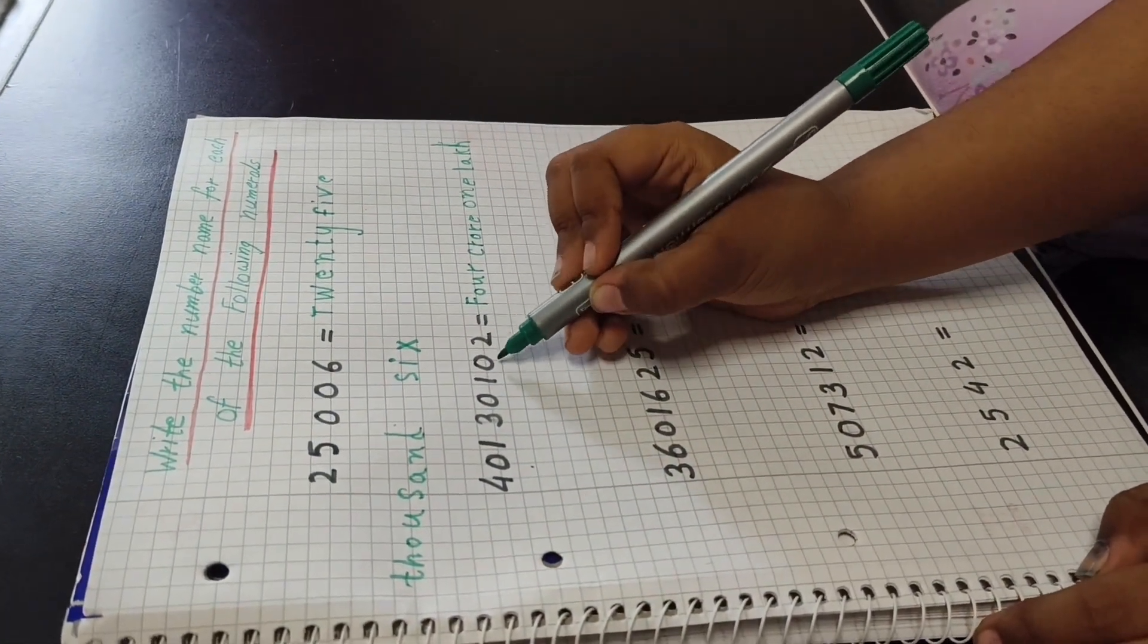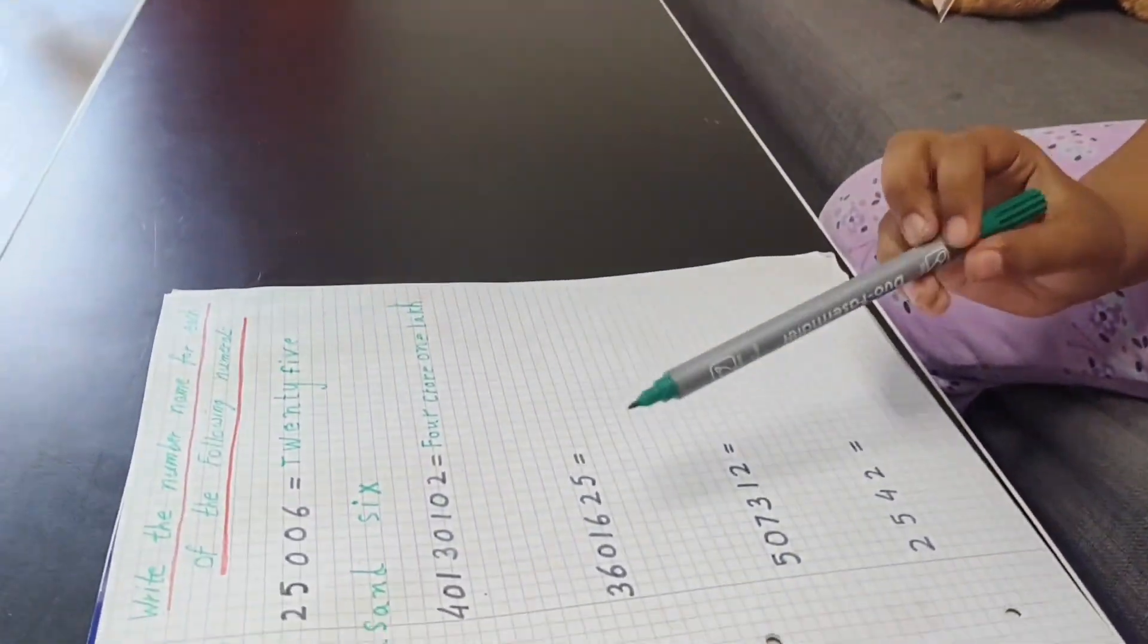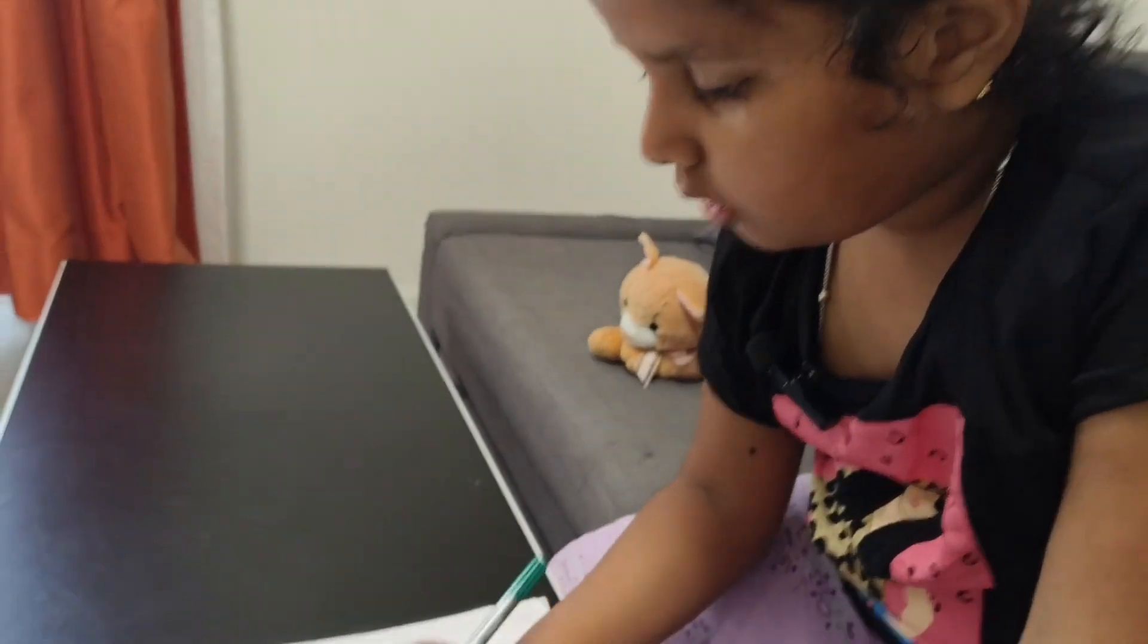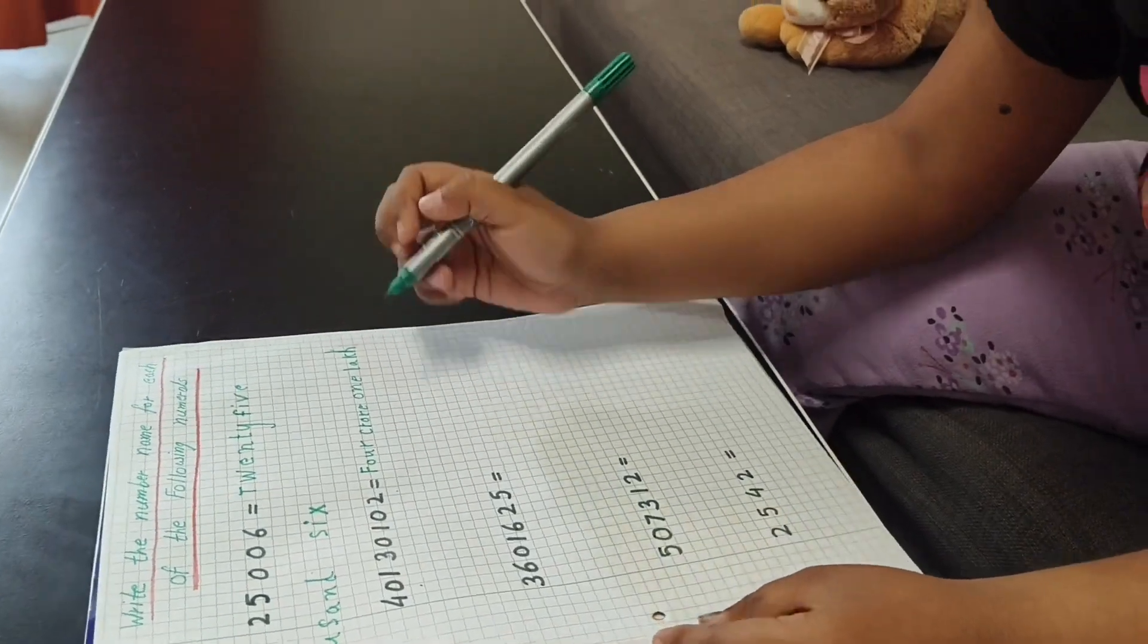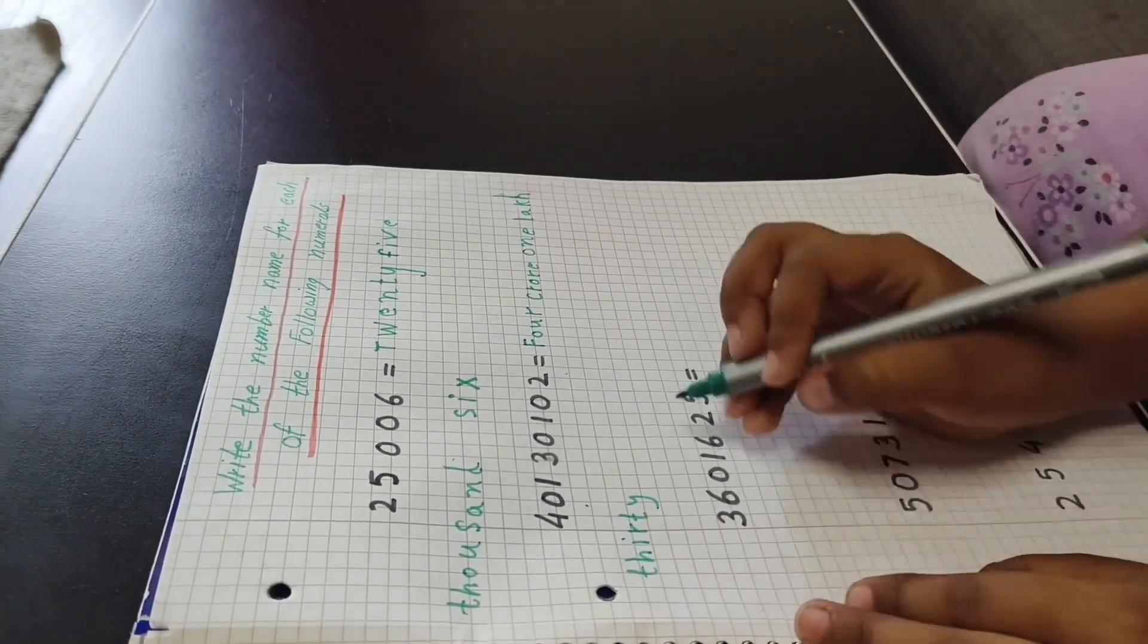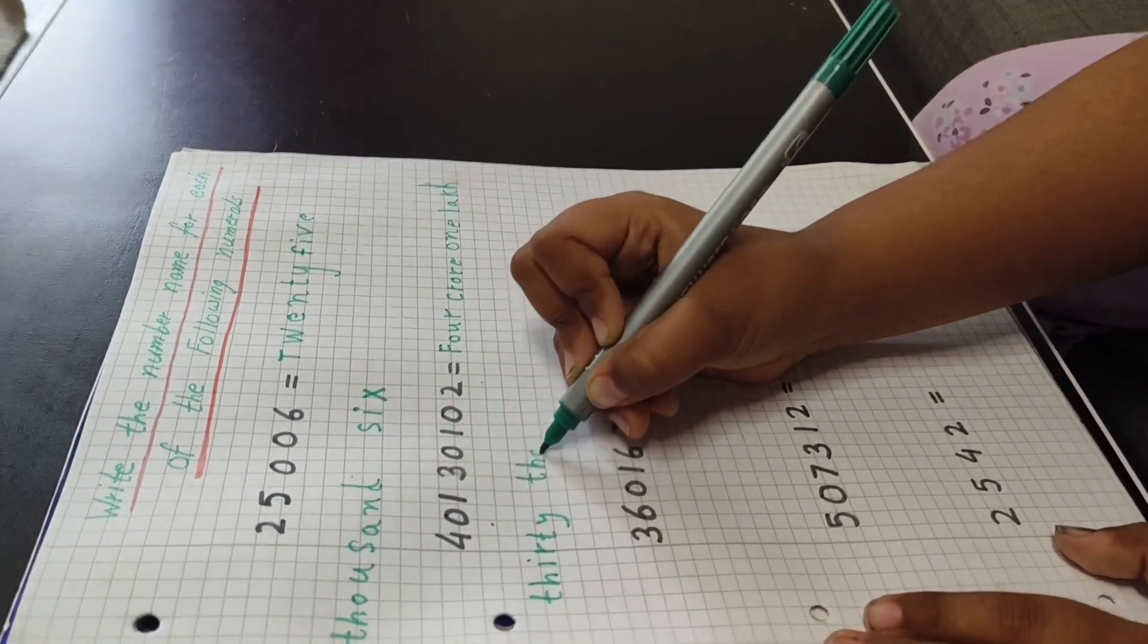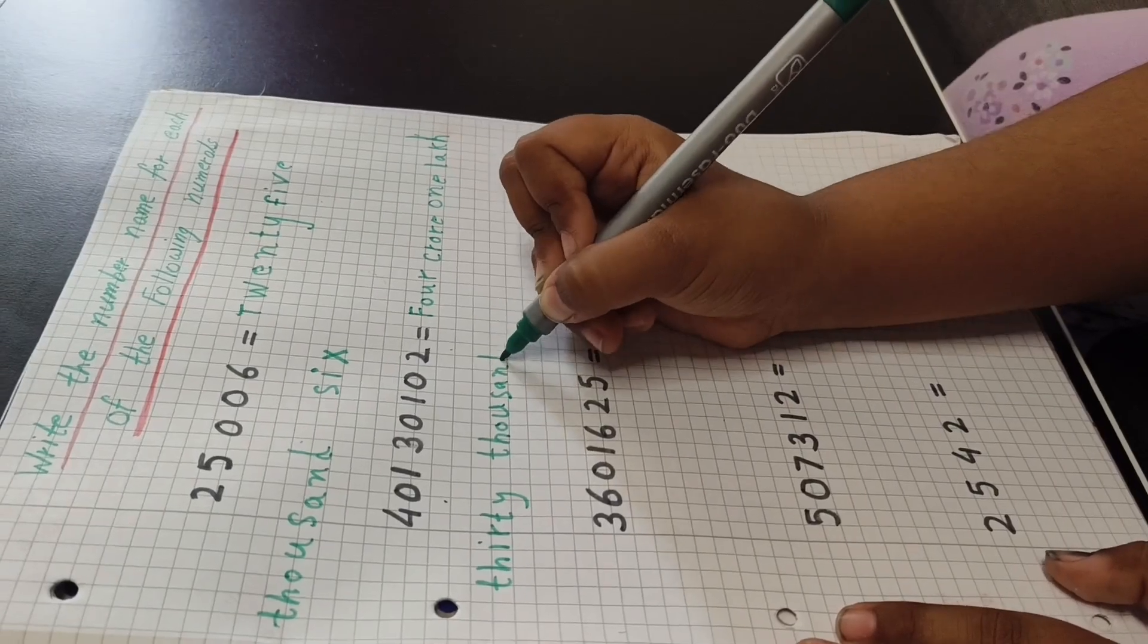So once, tens, hundreds, thousands, ten thousands. So ten thousand has two numbers, one and ten. So here is T and zero, how many? Thirty. So it will be thirty thousand. T-H-I-R-T-Y, thirty thousand, T-H-O-U-S-A-N-D. Look.